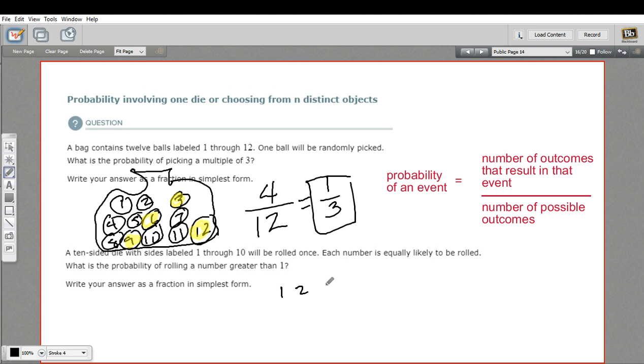The possible outcomes, we could get a 1, a 2, a 3, a 4, a 5, a 6, a 7, an 8, a 9, or a 10. All the numbers greater than 1 are these.